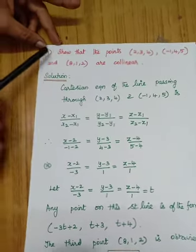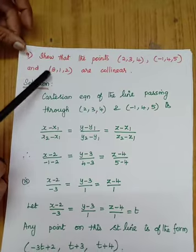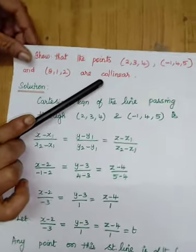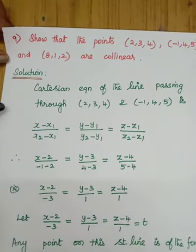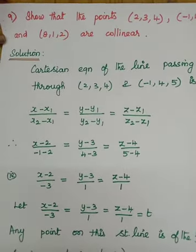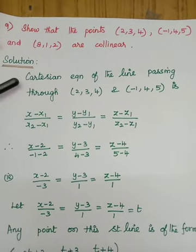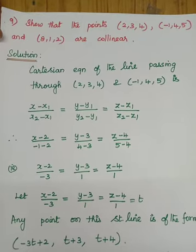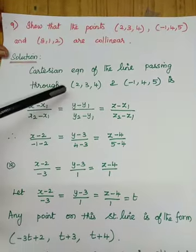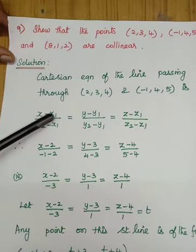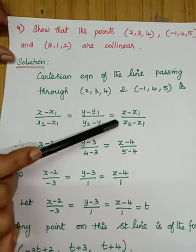Problem number 9: show that the points (2, 3, 4), (minus 1, 4, 5), and (8, 1, 2) are collinear. Collinear means all three points should lie on the same line. Using the first two points, we write the Cartesian equation of the straight line. The formula is: (x minus x1)/(x2 minus x1) = (y minus y1)/(y2 minus y1) = (z minus z1)/(z2 minus z1).